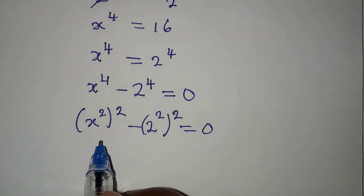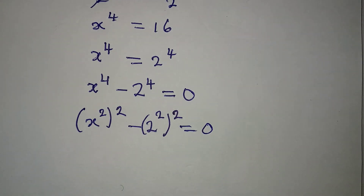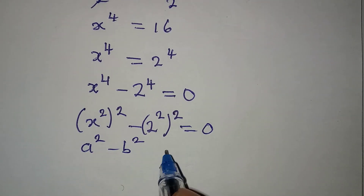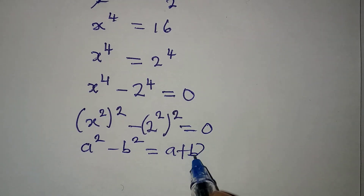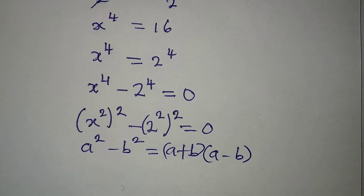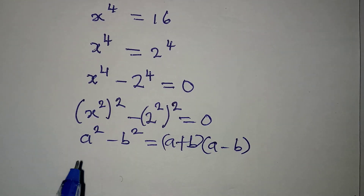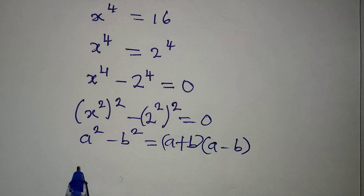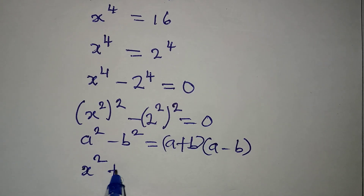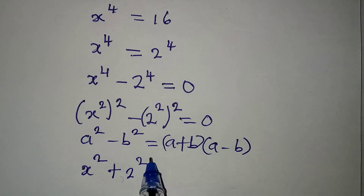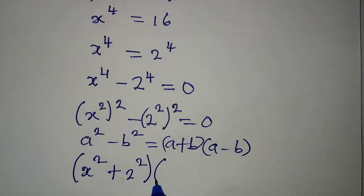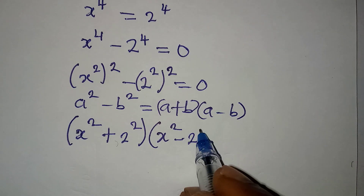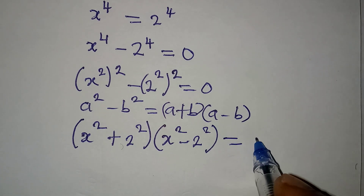From here, remember that we can now apply difference of two squares. If you have a squared minus b squared, it means that you should have a plus b and then a minus b. I'll apply the same thing here — what we have in the brackets is considered a. So I'll have x squared plus 2 squared, then x squared minus 2 squared, and everything is equal to 0.